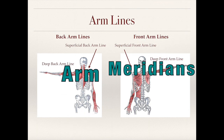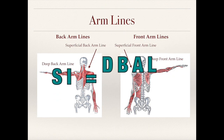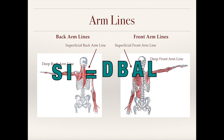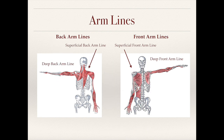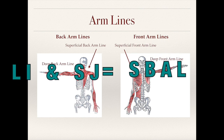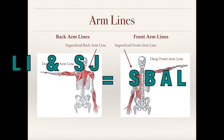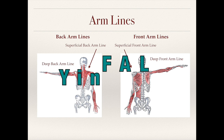Now let's take a look at the arm meridians. We find that the small intestine meridian is on the deep back arm line, and it includes the levator scapulae and the rhomboids. The large intestine and sanjiao are on the superficial back arm line, and this is important to understand because the large intestine and sanjiao meridians share a lot of common functions.